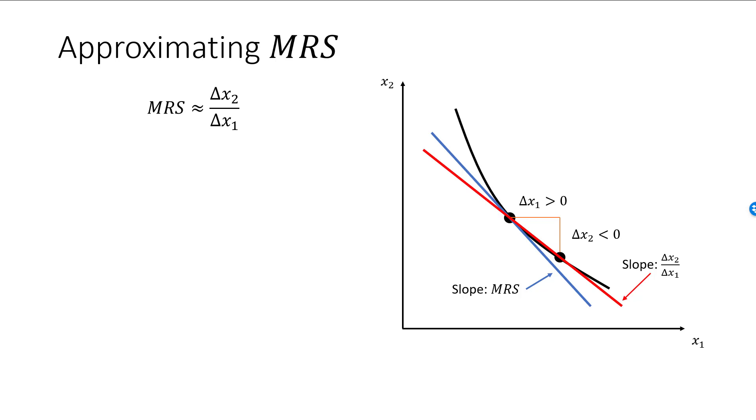So let's say that MRS, the slope of the blue line, is equal to minus 4 at our starting bundle, and delta x1 is 0.01 units. I increase my consumption of good 1 by 0.01 units. How much must I then decrease my consumption of good 2 if I want to stay on the indifference curve? Well, if I decrease my consumption of good 2 by 4 times as much, or by 0.04, then my new bundle will end up on the blue line.